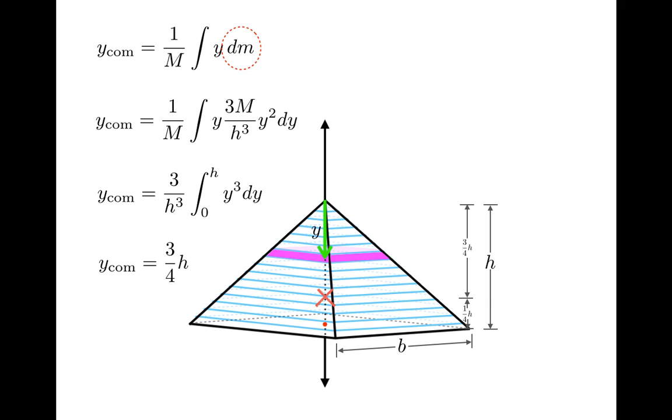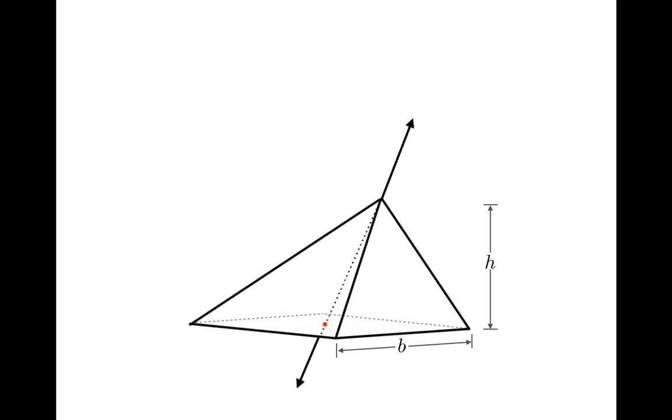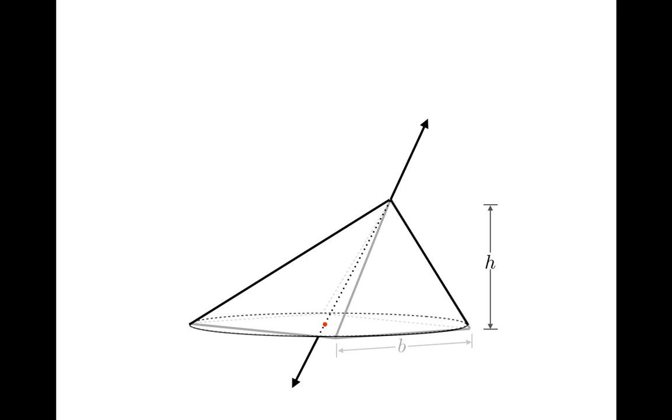So that's the end of the derivation for the center of mass of the pyramid. If you're looking for a challenge, you could try doing this problem again, but this time measure y from the base of the pyramid. Of course, you should get the same result. You could also think about how universal this result is. What if the apex of the pyramid were not above the base? Or what if the base weren't a square? You should be able to use the derivation we just did to guide you through these questions.